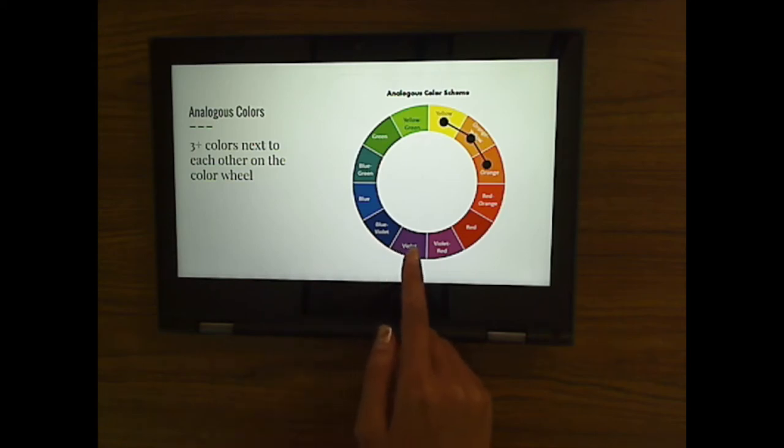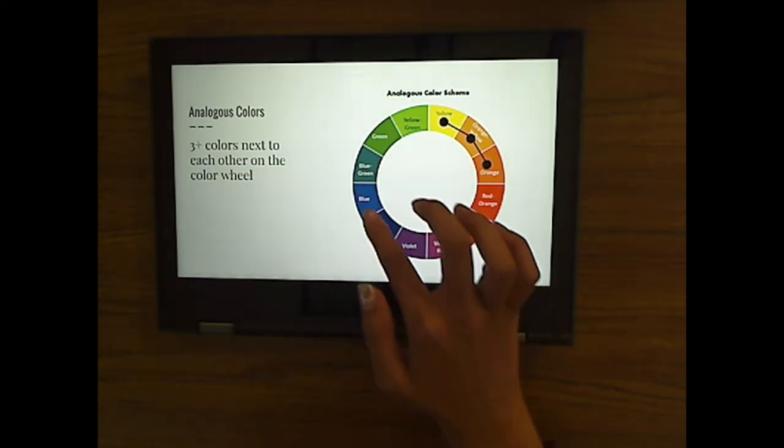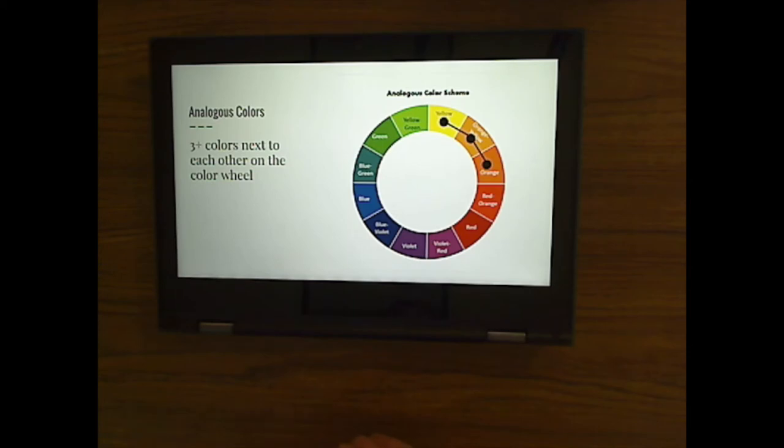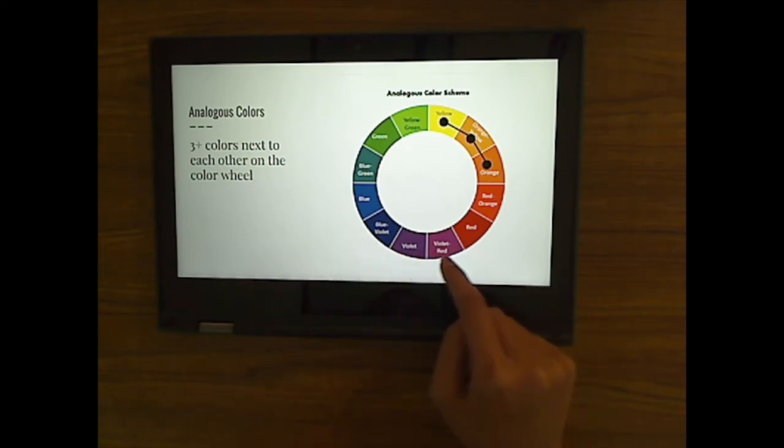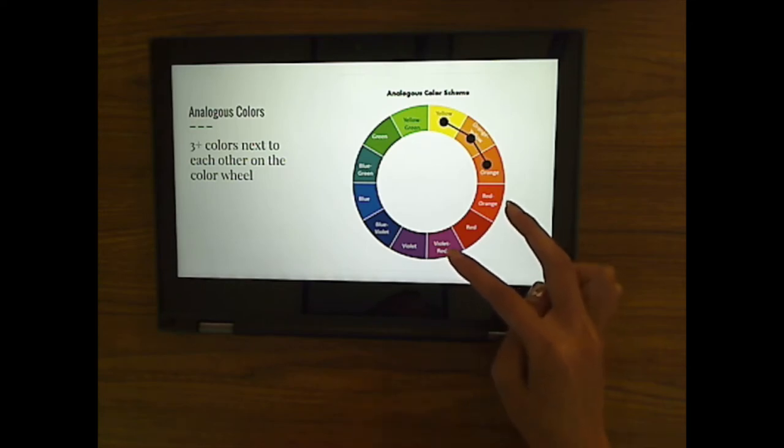What's another example for red? So if we have red, we can go upwards. That would be what other colors? Red, orange, and orange. We could go this way. So we have red, violet red, and violet. And again, the last option we have is to put red right in the middle between these two colors, which are what? Red orange and violet red. So we have red orange, red, and violet red. Those three colors would be analogous. Okay, we're going to use our intermediate colors and these analogous colors that we talked about when we color our project.